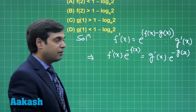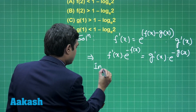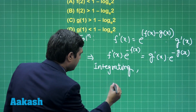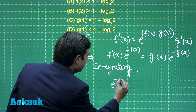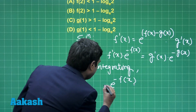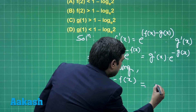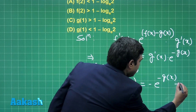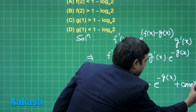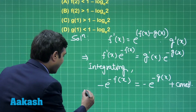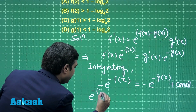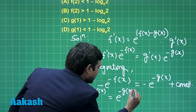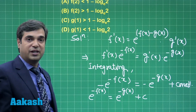Integrating both sides we obtain: negative e to the power minus f(x) is equal to negative e to the power minus g(x) plus some constant, which can be rewritten as e to the power minus f(x) is equal to e to the power minus g(x) plus constant c.